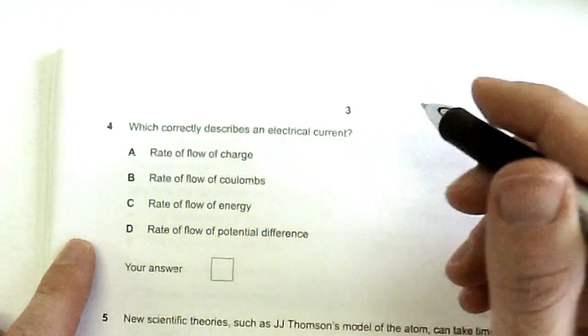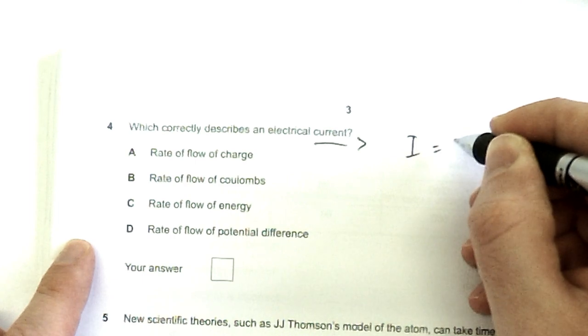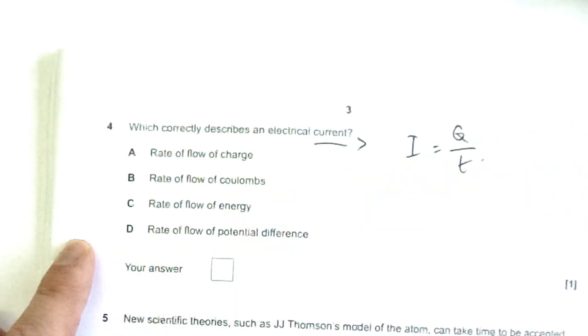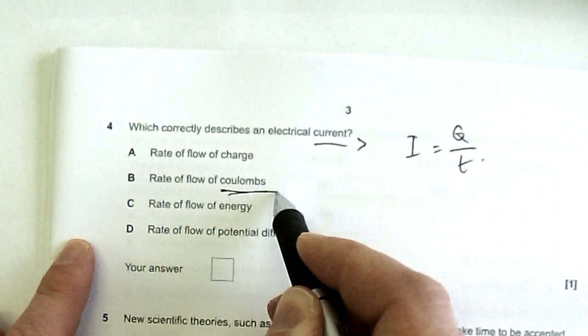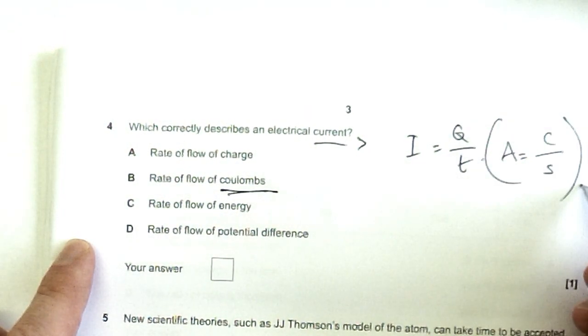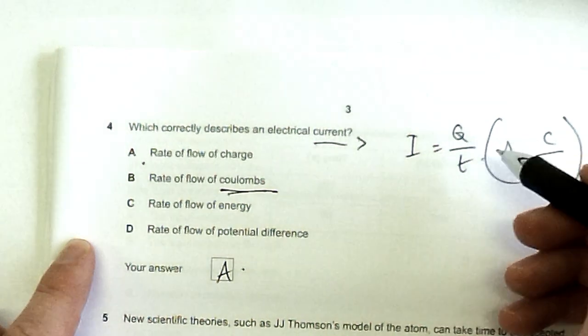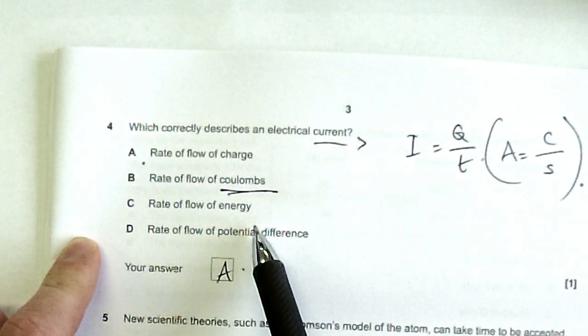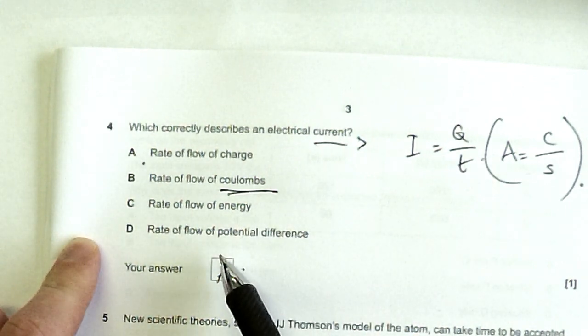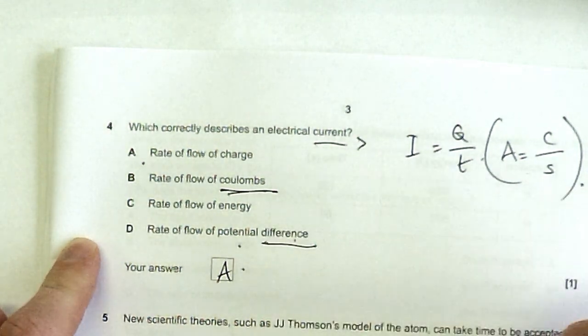Which one correctly describes an electrical current? This is really, secretly, an equation. Current is the change in charge over time. So this is a rate of flow of charge. This seems kind of okay, doesn't it? Because this would be coulombs per second. That would be an amp. Those are the units, though. So the definition of a current is A, a rate of flow of charge. Q stands for charge. Rate of flow of energy, no, it's not that. Energy in circuits is the voltage. Voltage is energy per unit charge, so it's not that. Rate of flow of potential difference. Potential difference doesn't flow. It's a difference in electrical potential between two points.